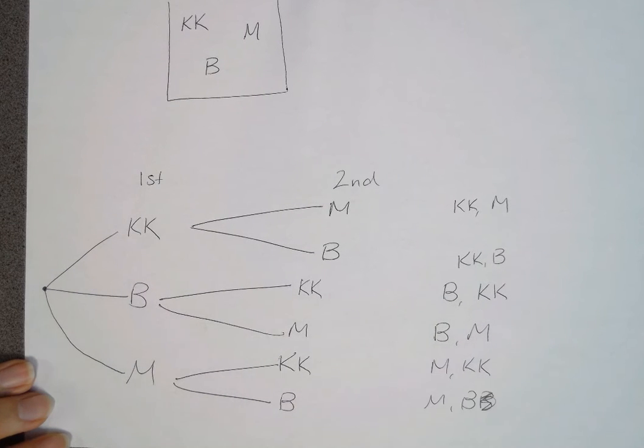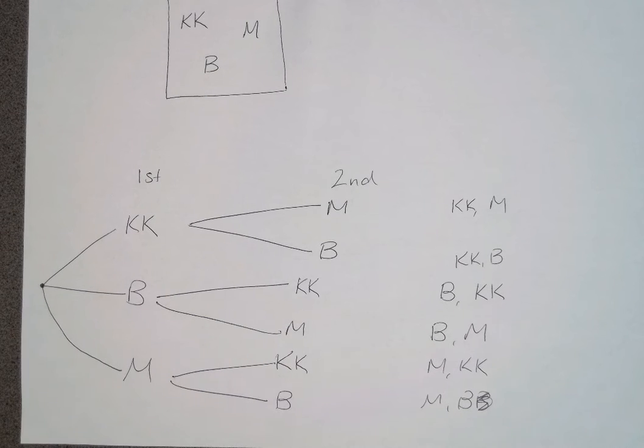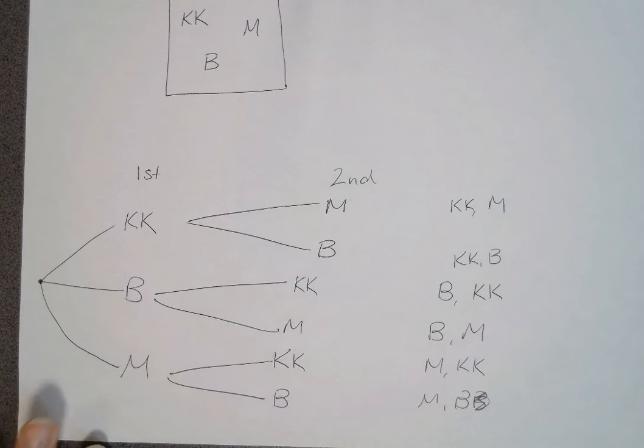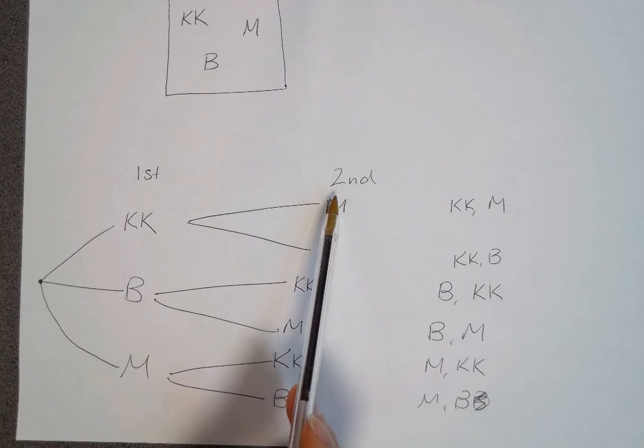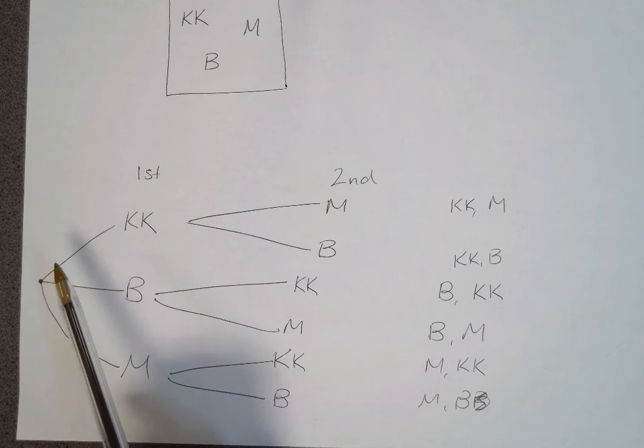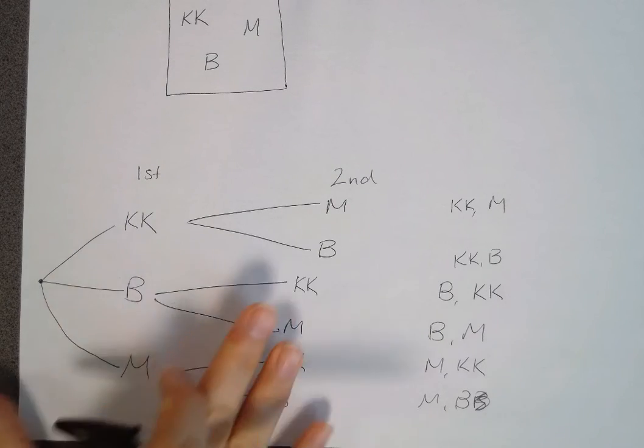What we can do with these tree diagrams is say the second outcome was affected by that first choice. So there's two different ways you can do tree diagrams.